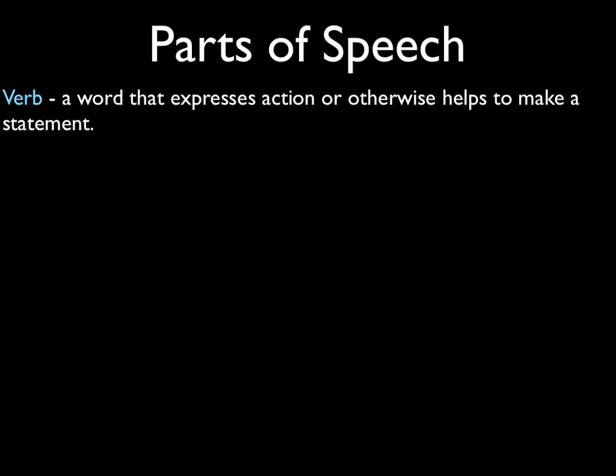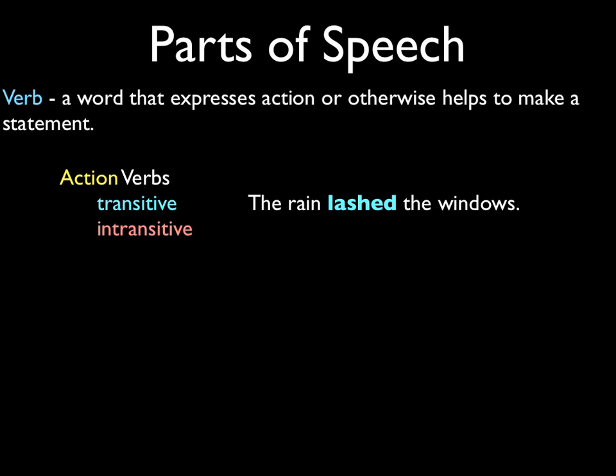Moving right along to the next very widely used type of word, and that is a verb — a word that expresses action or otherwise helps to make a statement. Of the action verbs, there are two kinds: the transitive and the intransitive. A transitive verb transfers action to an object or a person — 'The rain lashed the windows'; the windows are receiving the action. An intransitive verb would be something like 'My puppy sneezed' — nothing receives the action; the puppy performs it but nothing receives it, so it is intransitive.